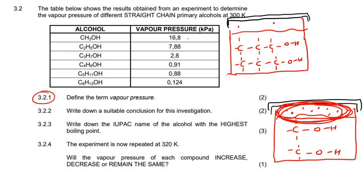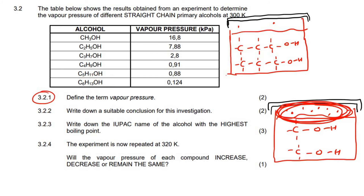So that means the vapor pressure for the shorter chain alcohol is going to be higher than the vapor pressure for the longer chain one. That's why we can see that as we go down the table, the vapor pressure is becoming less — because these intermolecular forces are so strong, it's very difficult to turn them into gas, and so the vapor pressure is very low. There's an inverse relationship: as you increase the intermolecular forces, you decrease the vapor pressure.